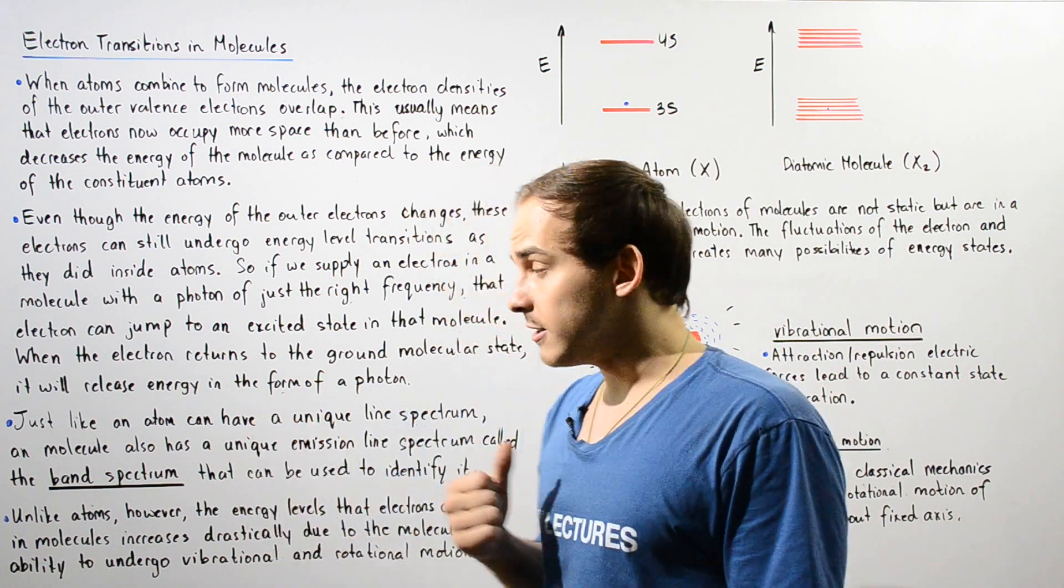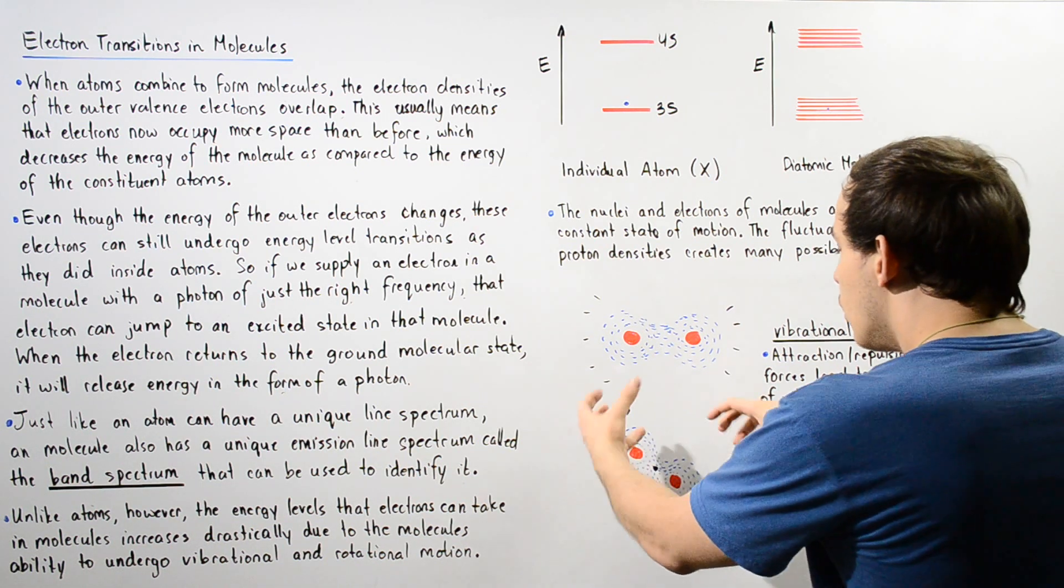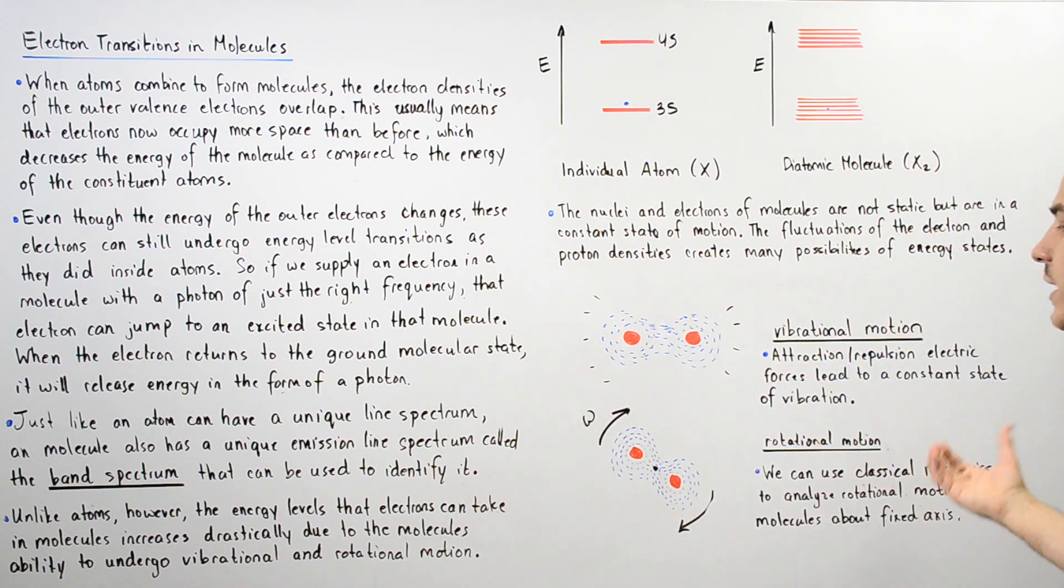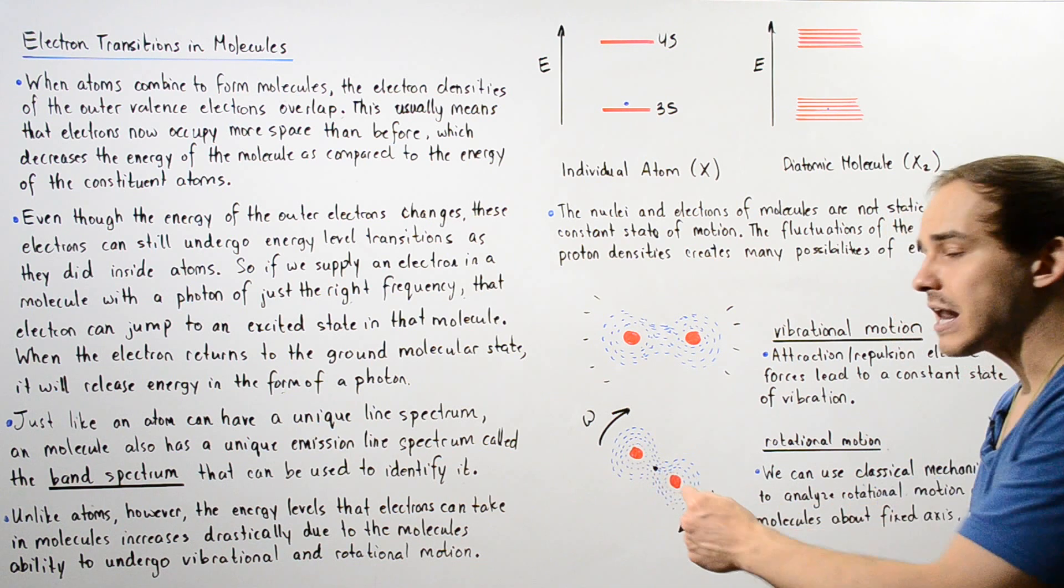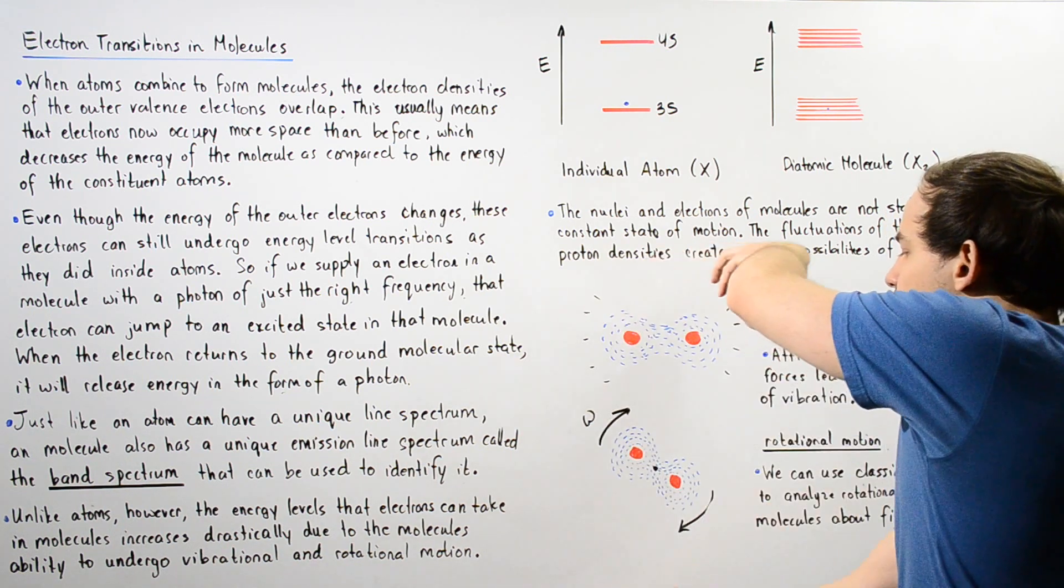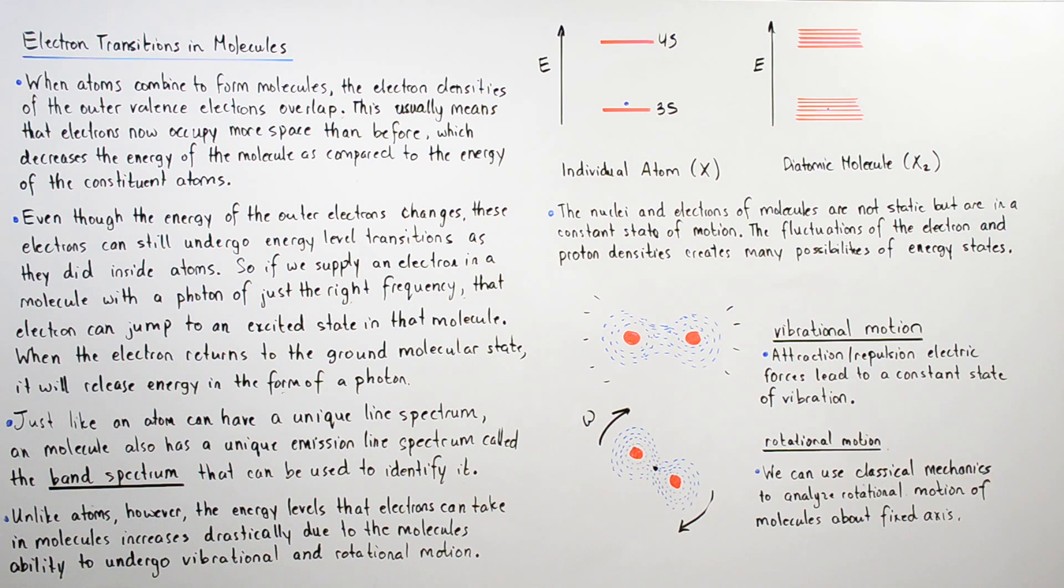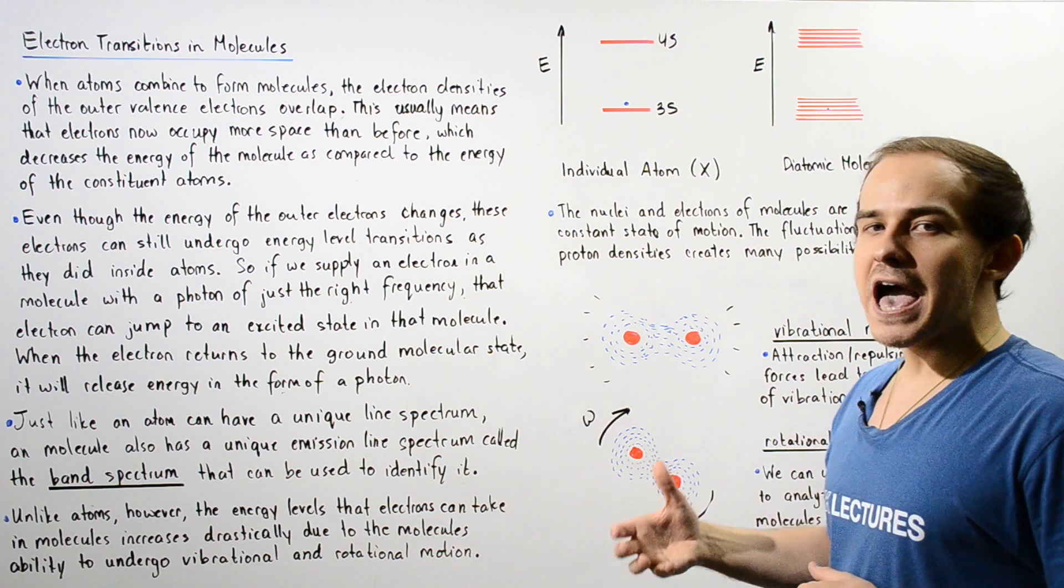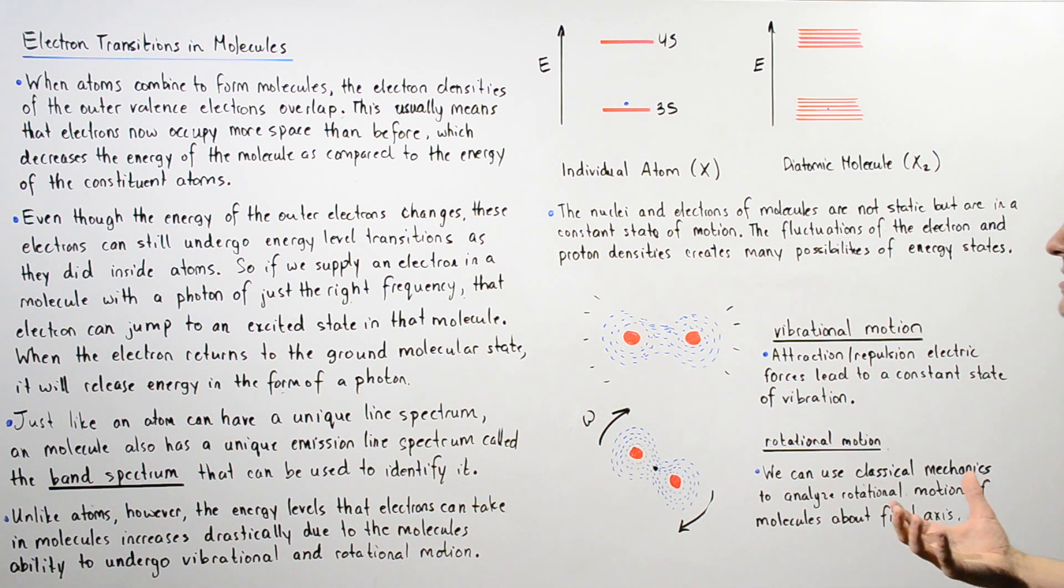Now, if we apply the classical theory for our diatomic H molecule, we can easily see how it will undergo rotational motion. So if the rotational axis is coming out of the board, our molecule can actually rotate. So we can use classical mechanics to analyze the rotational motion of our molecules about some fixed axis.